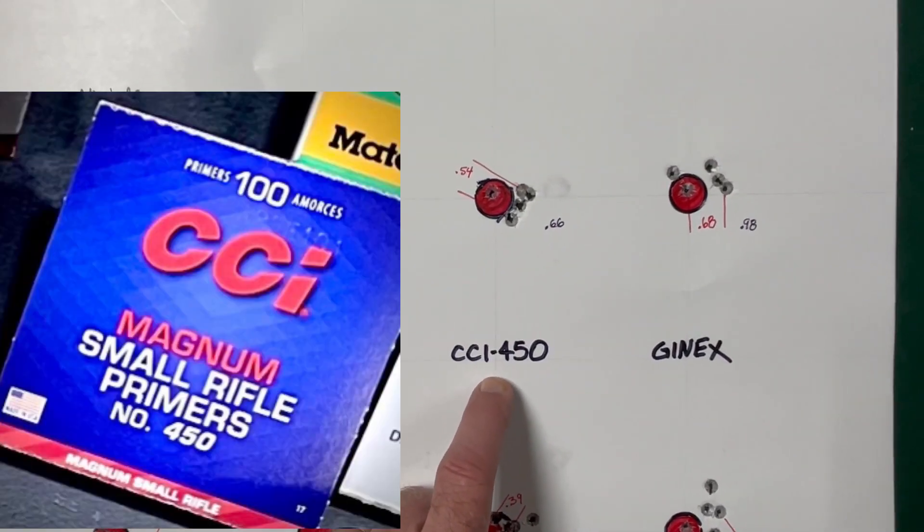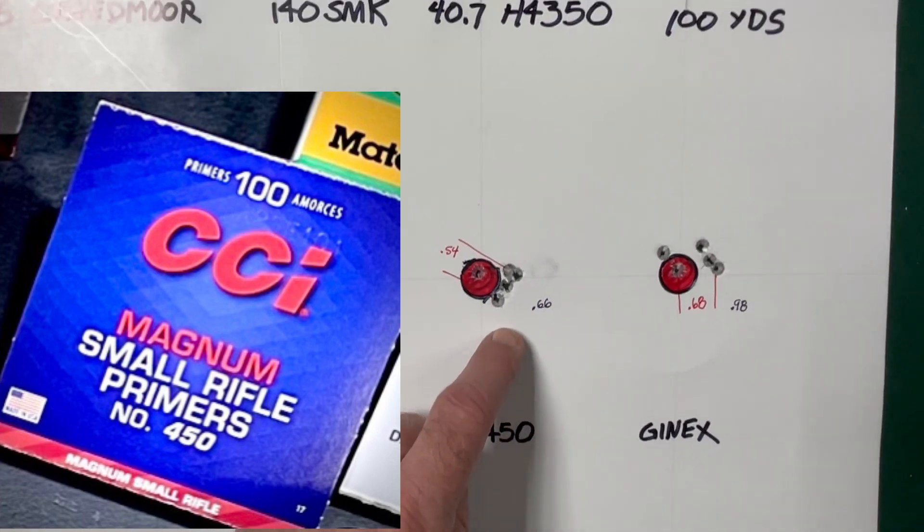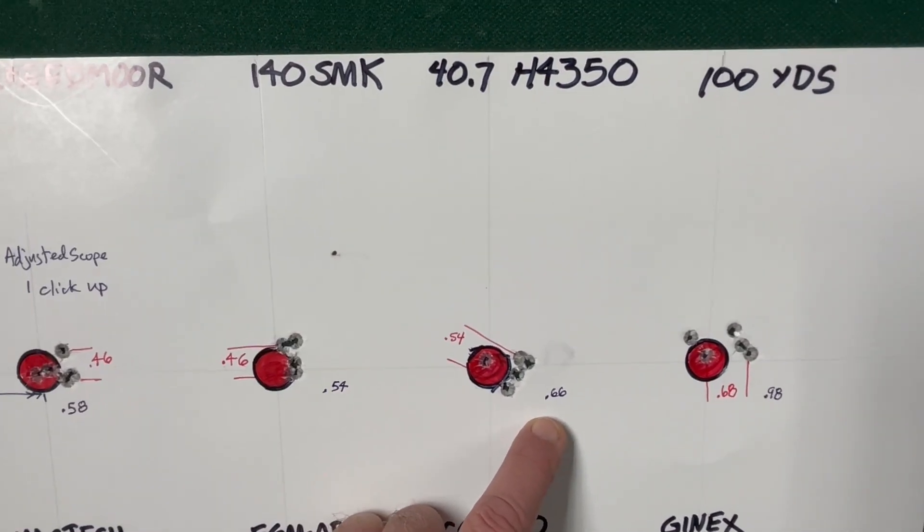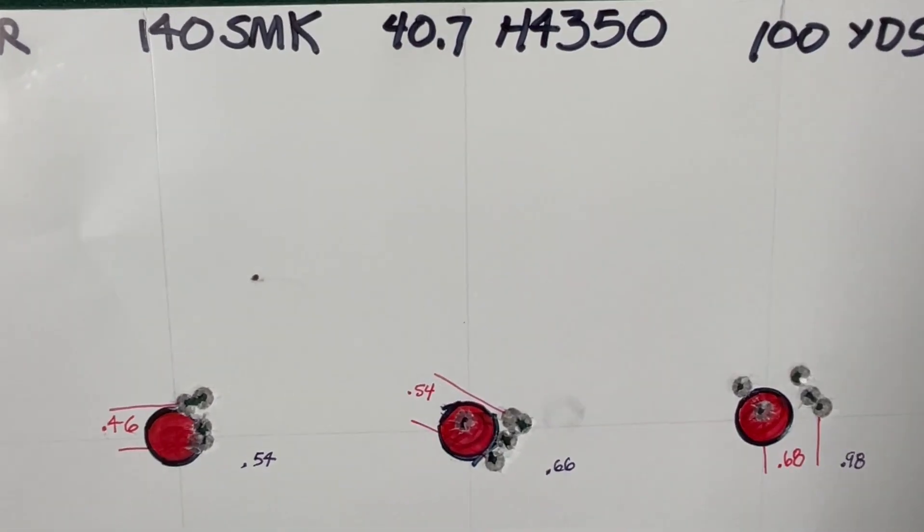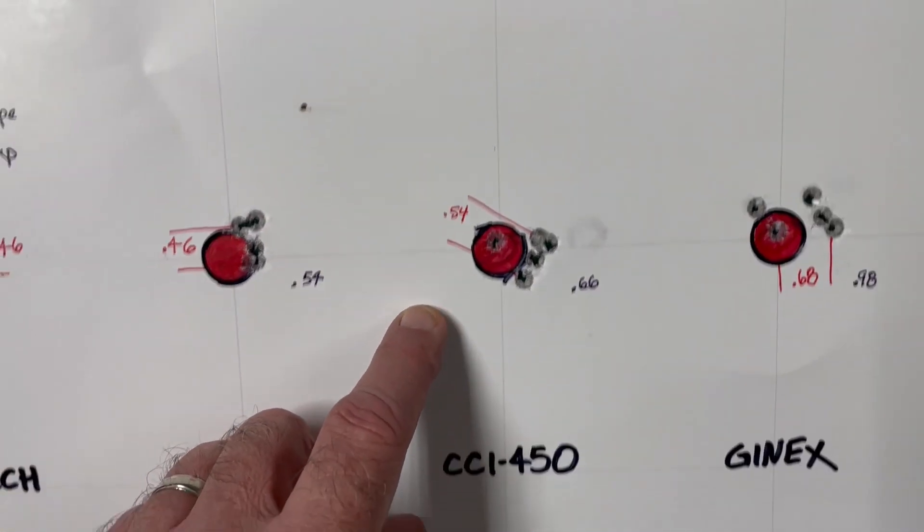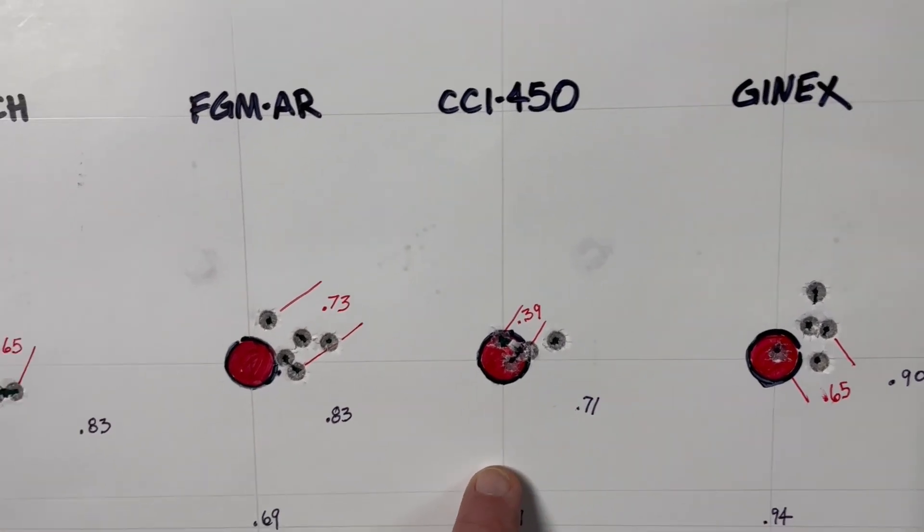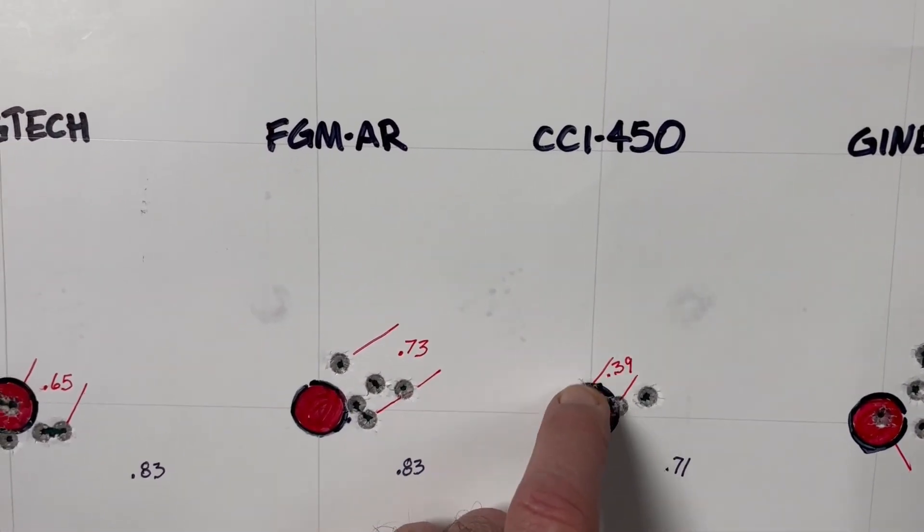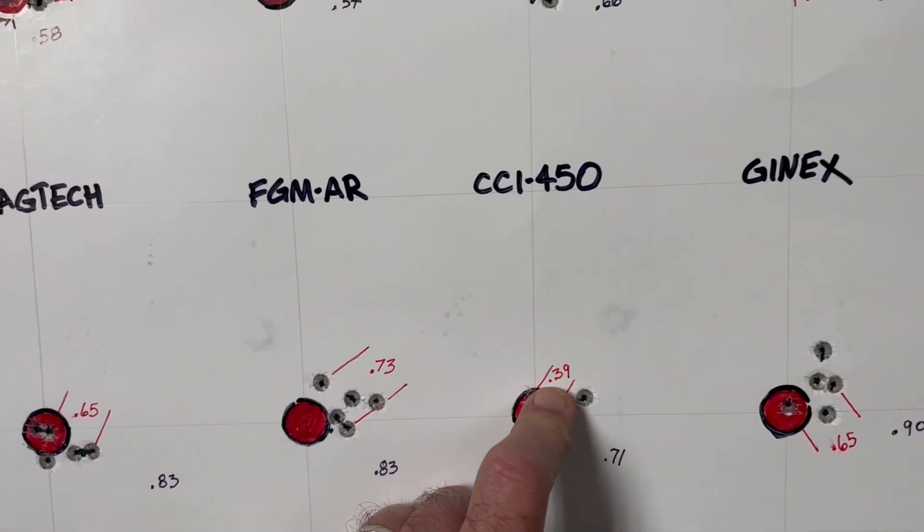The CCI 450 Magnum Primer, I expected those to do pretty well. We had an extreme spread of .66 inches and a best four out of five at .54. On the second group, we had an extreme spread of .71 and a best four out of five at .39.